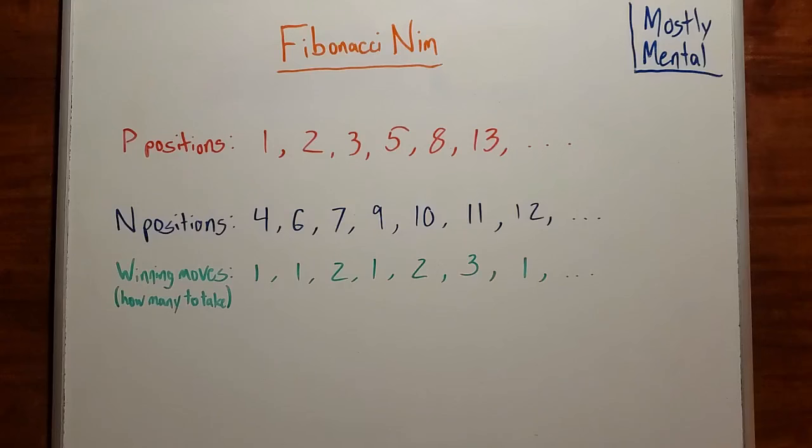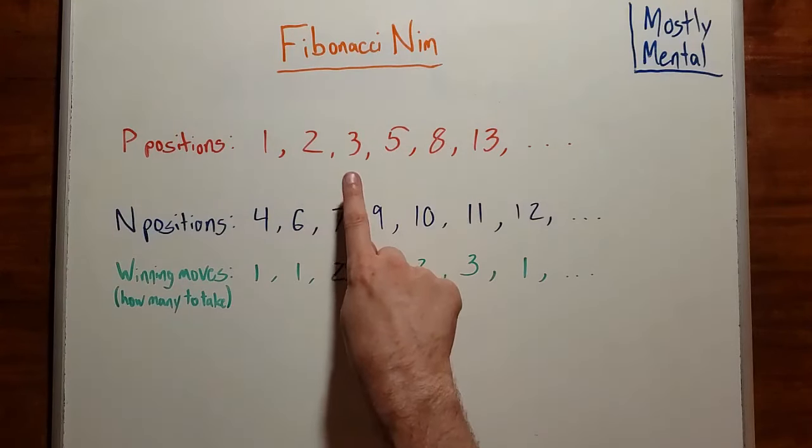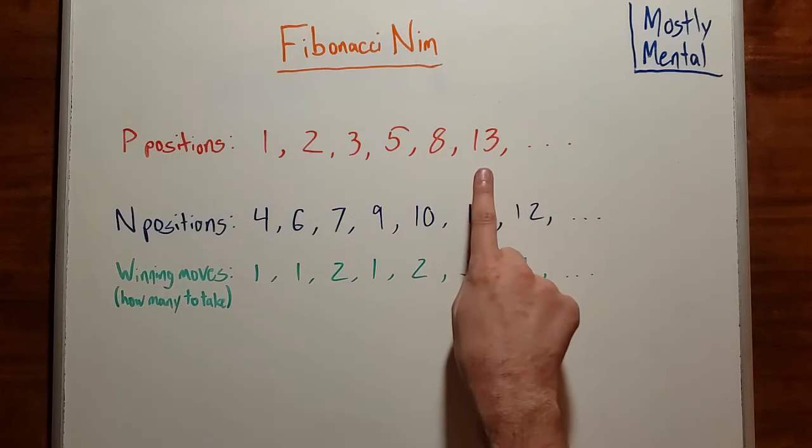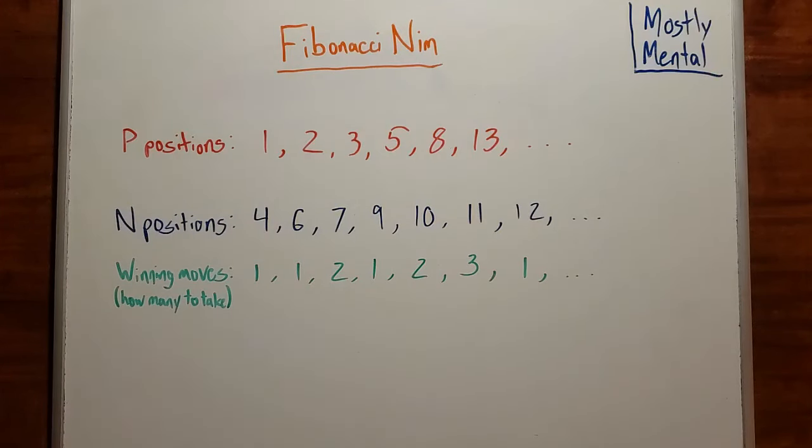When we do, we see that the starting P positions are 1, 2, 3, 5, 8, 13... hang on, I've seen those numbers before. And you've read the title, so you are probably wondering when the Fibonacci numbers would show up.